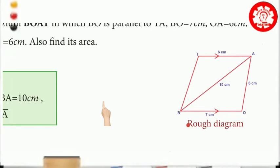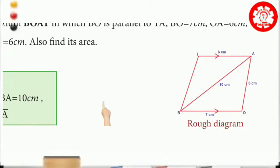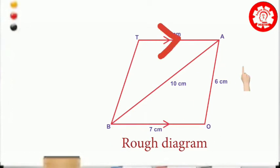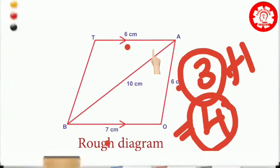The vertices are B, O, A, T — this is cyclic anti-clockwise. You can see B, O, A, T. We draw the rough figure: BO measures 7cm, OA measures 6cm, BA measures 10cm, and TA is parallel. The diagonal connects opposite vertices. Three sides plus one diagonal gives us four measures total for this trapezium.